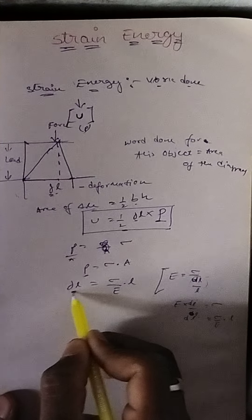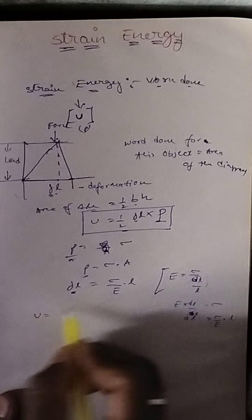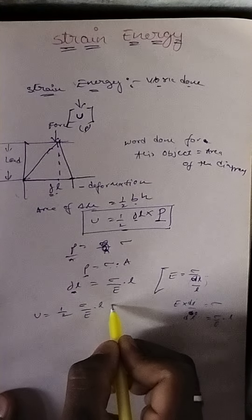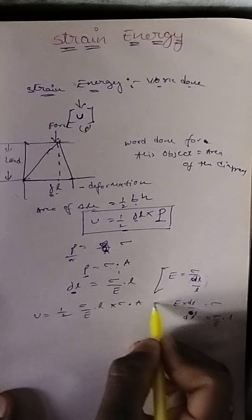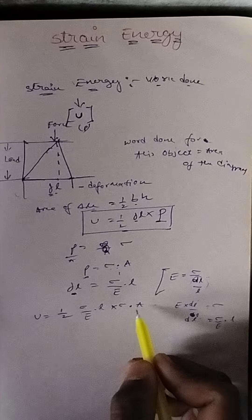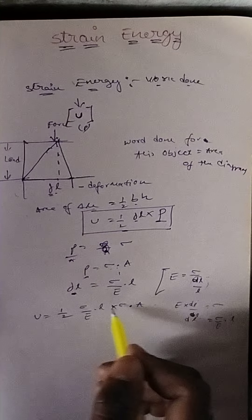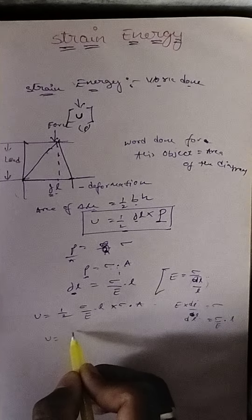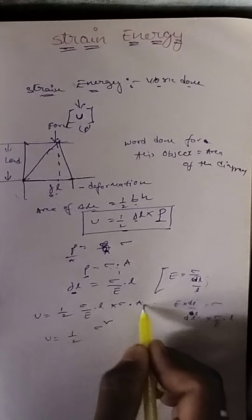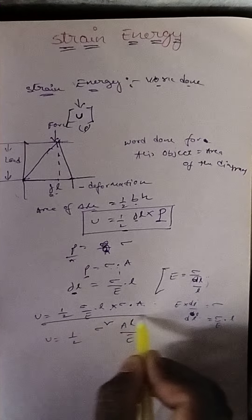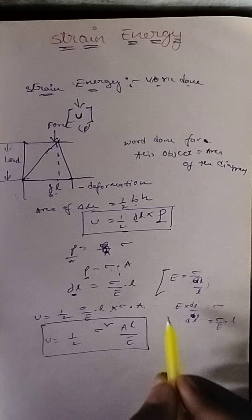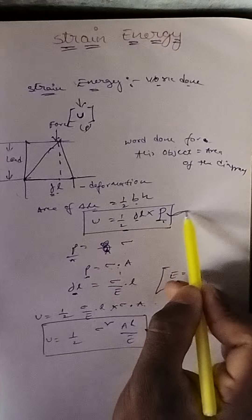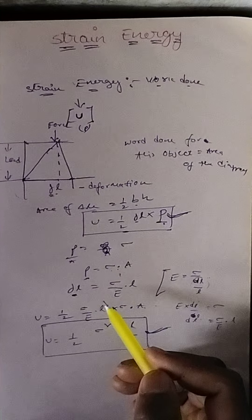Substituting into the strain energy formula: U = ½ × P × δL = ½ × (σ × A) × (σ/E × L). This simplifies to U = ½ × σ² × A × L / E. So these are the two formulas for strain energy: one in terms of force and deformation, and one in terms of stress.